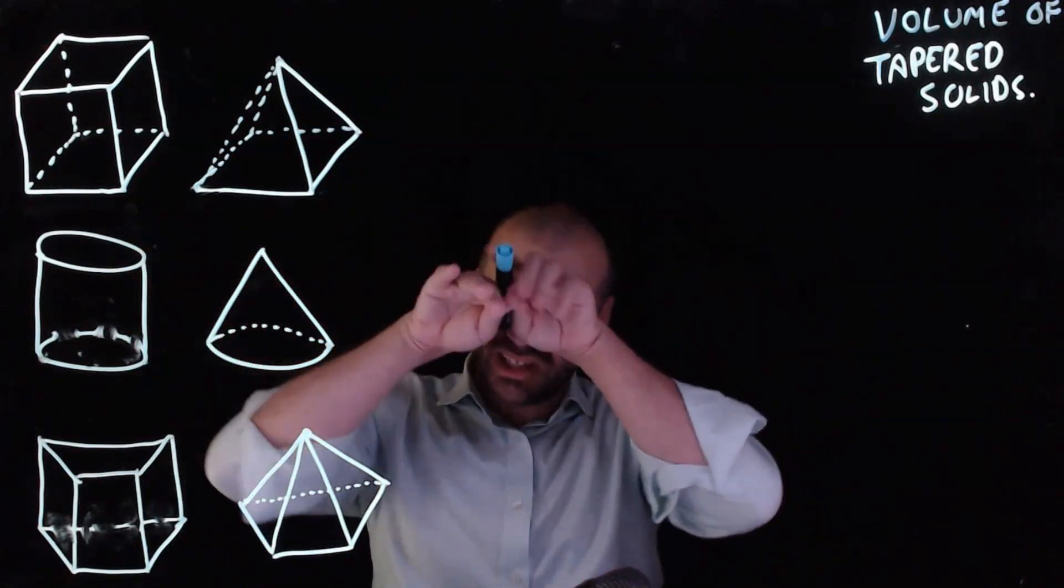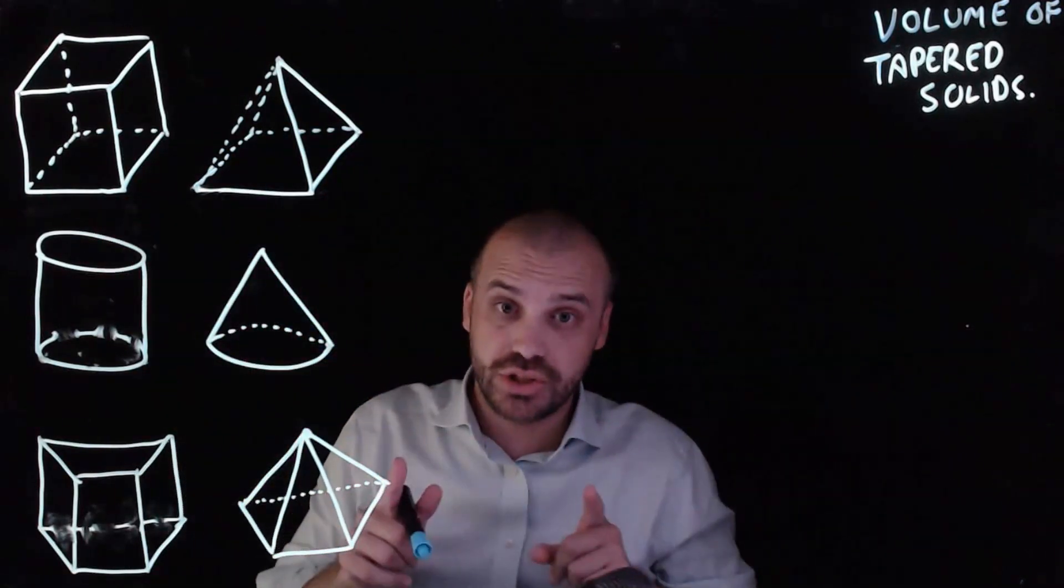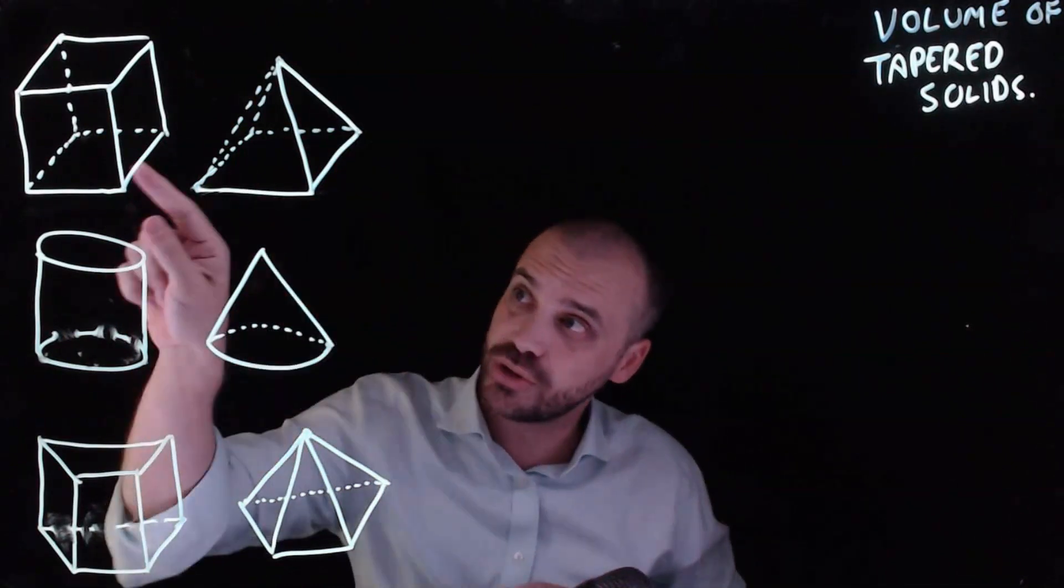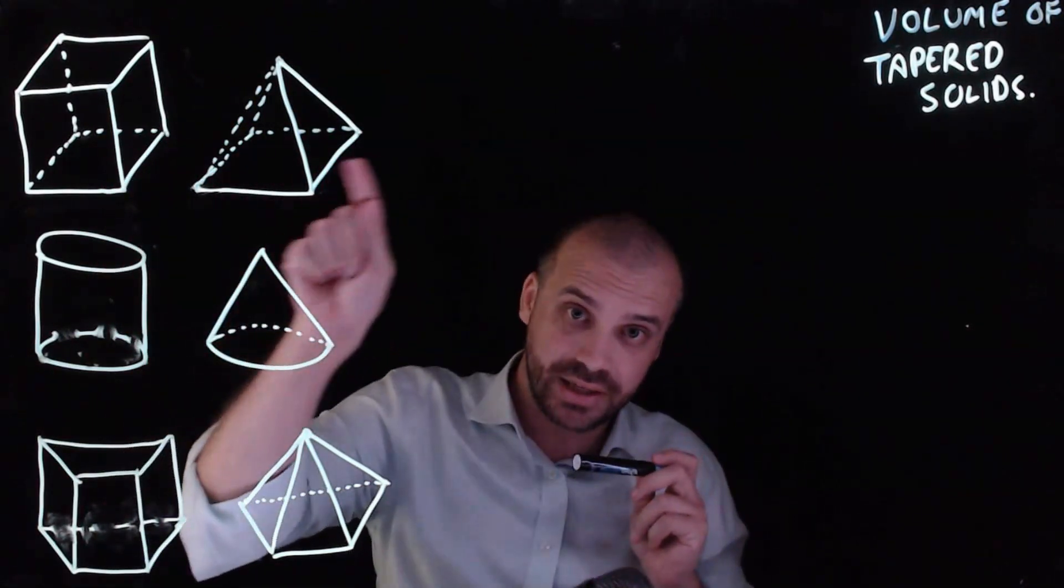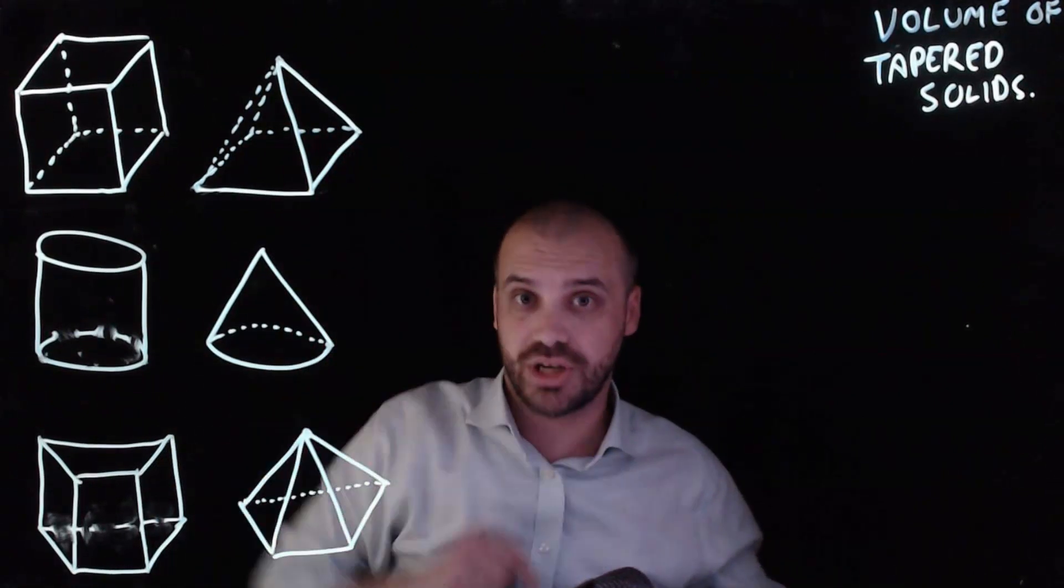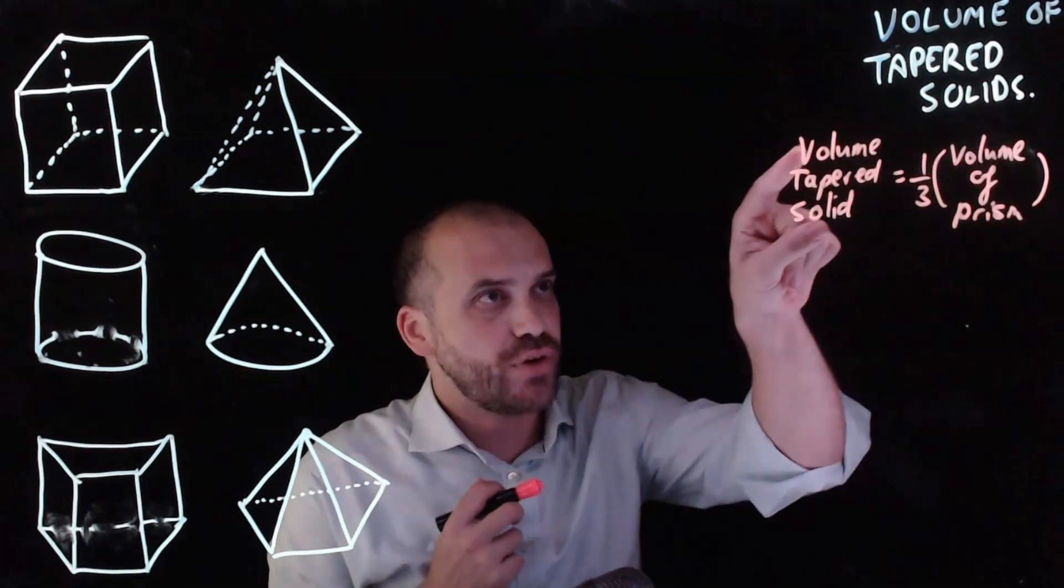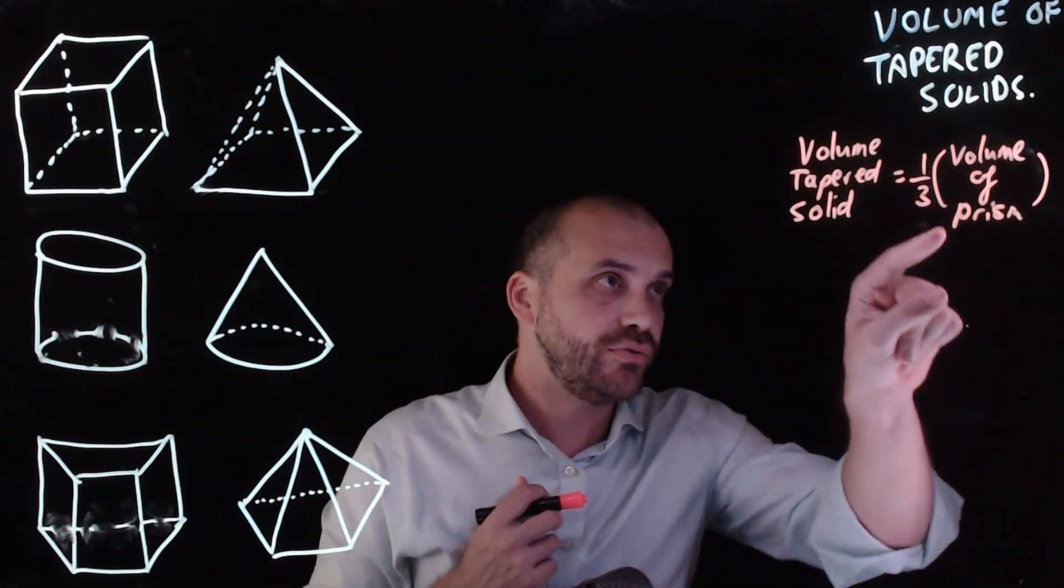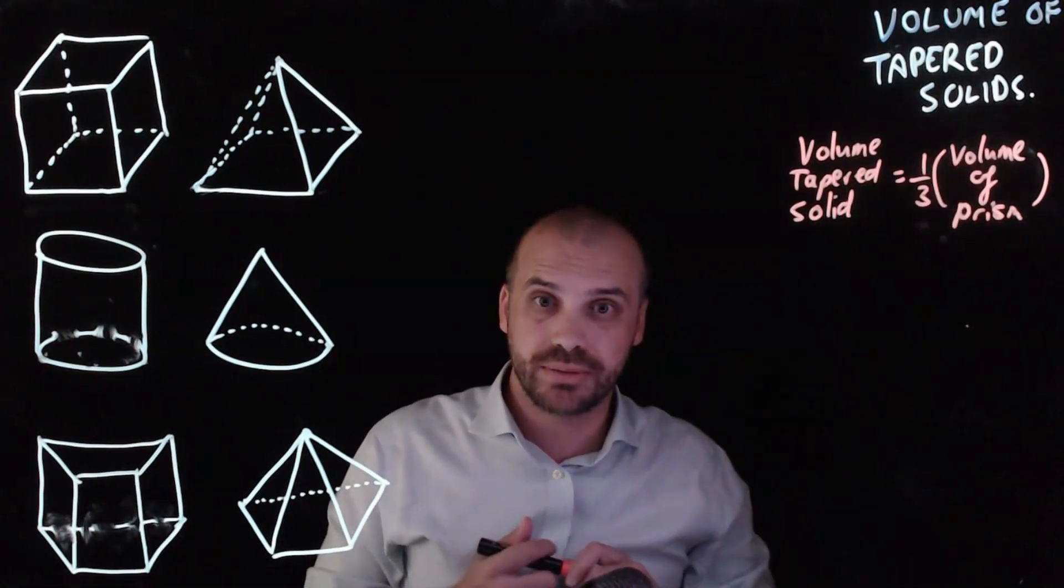Now, why am I talking about these weird shapes? There is a relationship between this shape and this shape. And if you can find the volume of this shape, you can very easily find the volume of this shape. The volume of a tapered solid equals one-third of the volume of the prism.